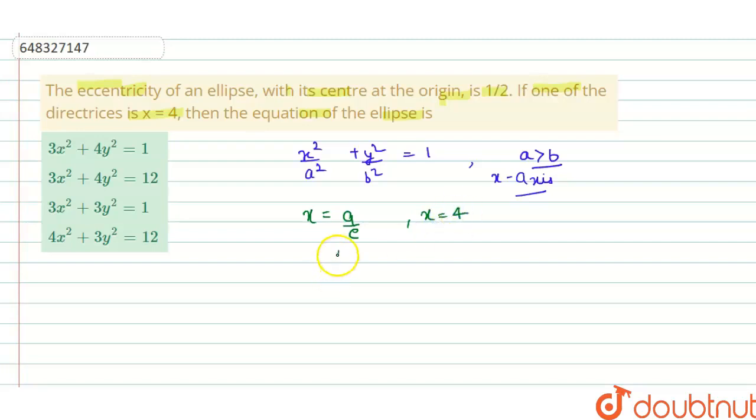It is given in the question x equals four, so a by e equals four and we know that a equals four e. From the question it is given e equals one by two, so a equals four into one by two, so two. The value of a comes out to be two and a square comes out to be four.